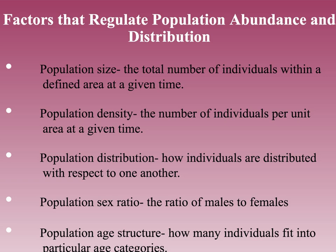Population distribution is how individuals are distributed with respect to one another — trees can be random in the wild, uniform in plantations, or clumped for family or pod animals. Population sex ratio is the ratio of males to females, normally close to 50-50. Population age structure is how many individuals fit into particular age categories. The more younger people you have, the quicker you can grow because they'll be coming into birthing age sooner. The more people in older ages, the slower your population will grow.